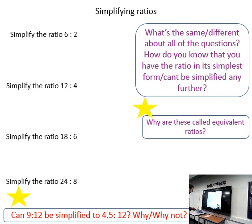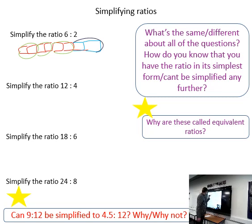When we are simplifying ratios, we can use a bar model approach. Here we've got six parts on the left side and then two parts on the right side. All these parts are the same size. We can group it into twos, so we've got one group here, another group here, another group here. We could also see that as three parts to one part.